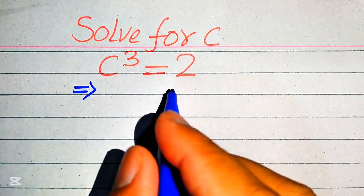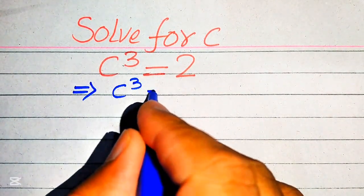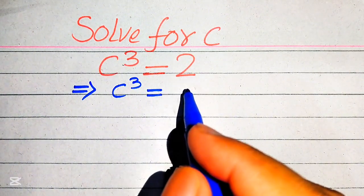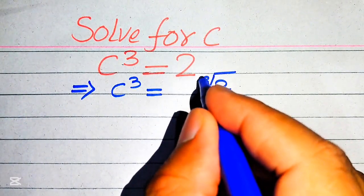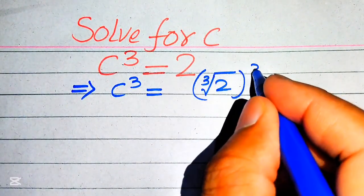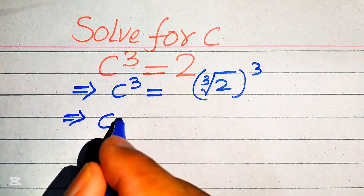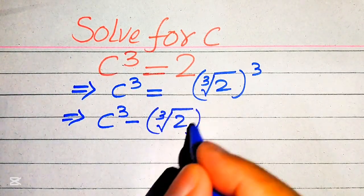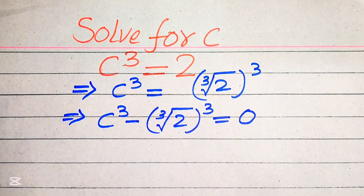First we focus on the right-hand side and convert it into cubic form. This will be written as c cubed equals — we apply the cube and cube root at the same time on the right-hand side — so it becomes the cube root of 2, whole cubed. Then we move this term to the left-hand side: c cubed minus cube root of 2, whole cubed, equals zero.